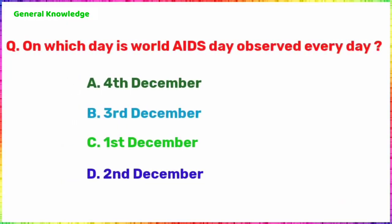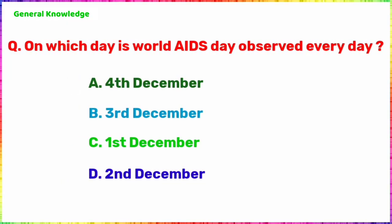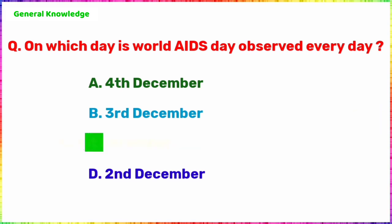On which day is World AIDS Day observed every year? The correct answer is Option C, 1st December.